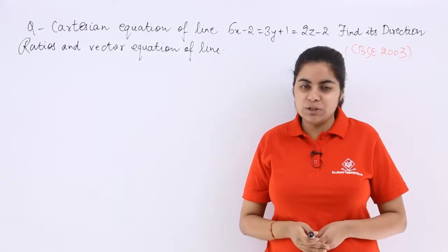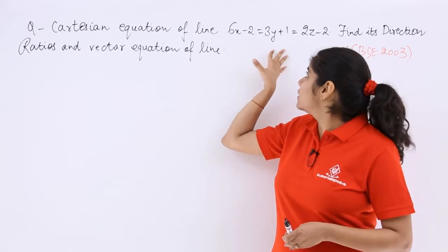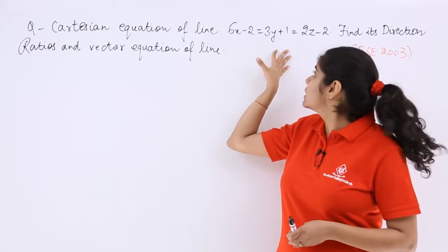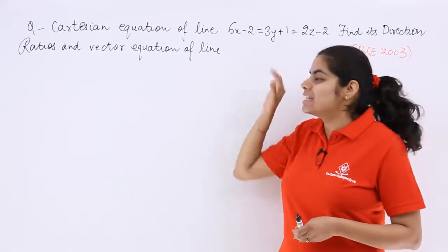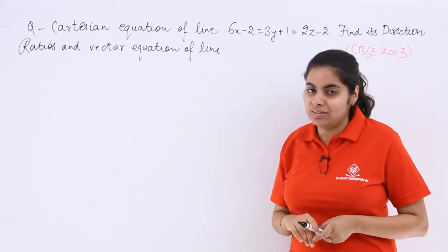A previous year CBSE examination question from 2003. Cartesian equation of a line: 6x-2 is equal to 3y plus 1 is equal to 2z-2. You have to find out the direction ratios and the vector equation of a line.